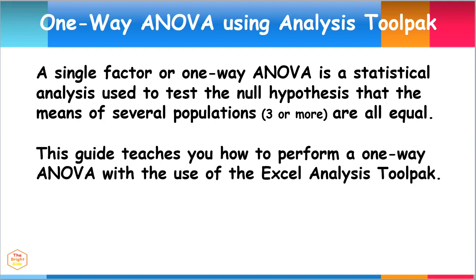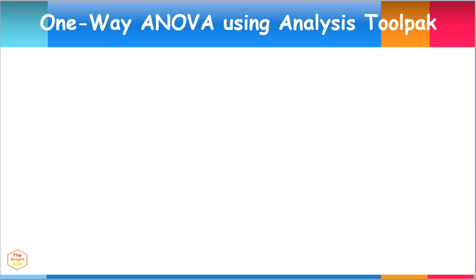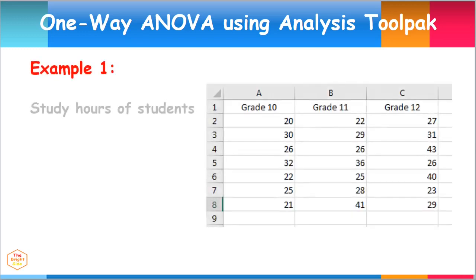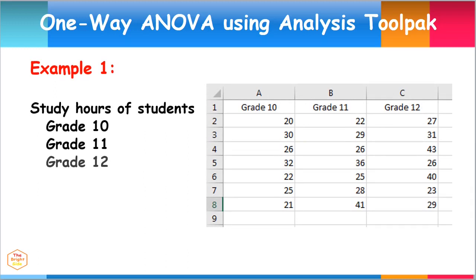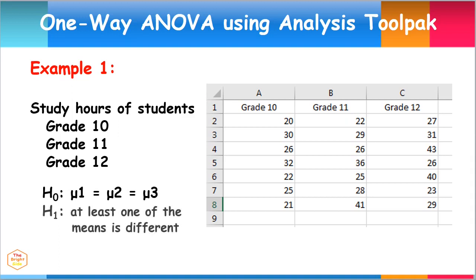For our specific example, we will use the study hours of various students from Grade 10, Grade 11, and Grade 12. The null hypothesis states that the means of study hours are all equal, while the alternate hypothesis says that at least one of the means is different.